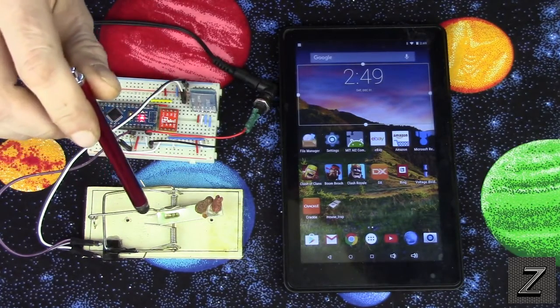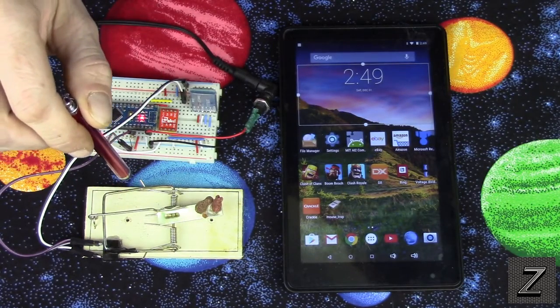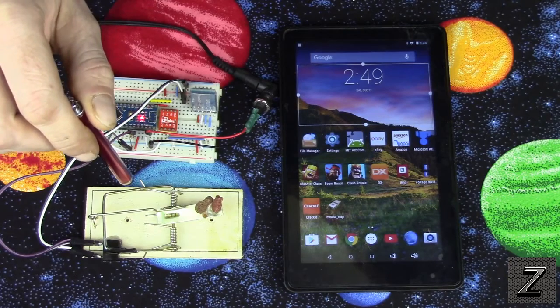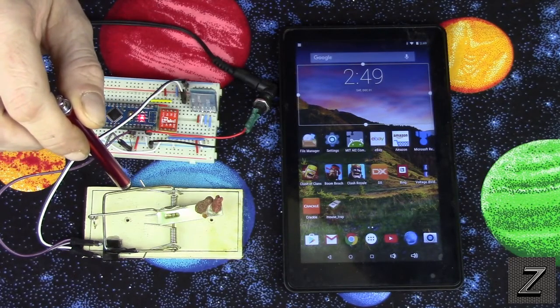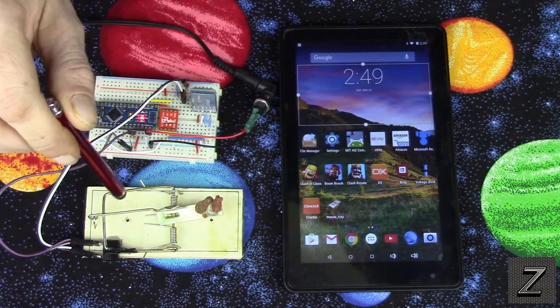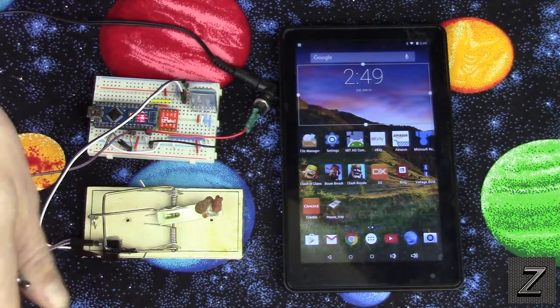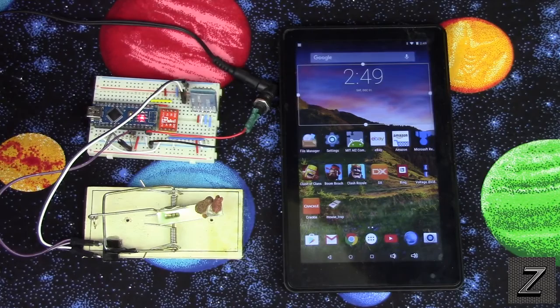Now I also do recommend mounting this project on like a small piece of scrap plywood or a little chunk of 2x4, just something to weight it down a little so when the trap goes off it's not flipping over and unplugging.